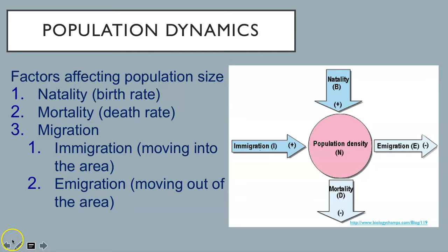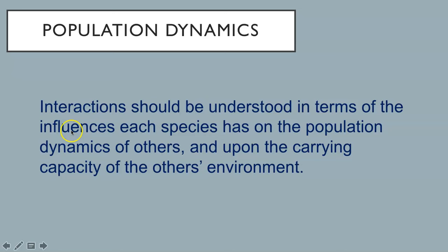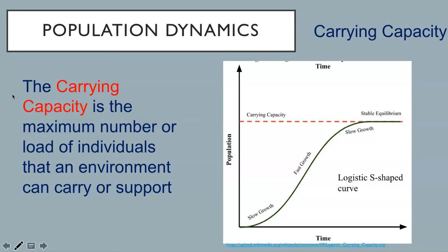Interactions between organisms should be understood in terms of the influences each species has on the population dynamics of others and upon the carrying capacity of the other's environment. The carrying capacity is the maximum number of individuals that an environment can carry or support. Initially there is slow population growth, but as it accesses unlimited resources, it grows rapidly. However, as resources like food, water, and habitat are consumed, the growth rate begins to slow. Once the environment can hold no more individuals, the population stops increasing in size—individuals are born and die, but these numbers are now in equilibrium.